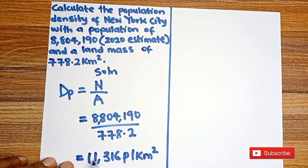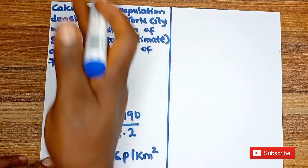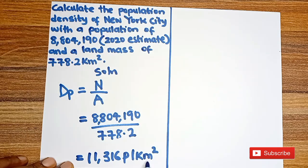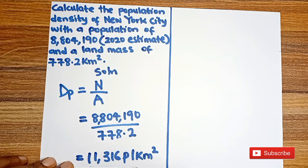So the population density is 11,316 persons per kilometer square. So whenever you are calculating population density, we are talking about the number of persons in a particular area. So if that entire city is divided into each kilometer square, this is the number of persons that can reside in that small segment of the city.